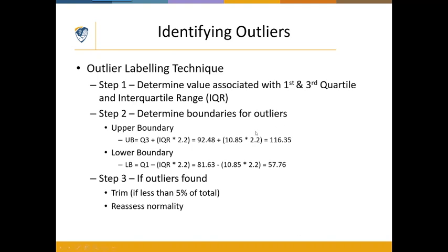There's a three-step process using the outlier labeling technique. Step one is to determine the interquartile range. We take the raw score value associated with the 75th percentile — which is 92.48 — and subtract the raw score value associated with the 25th percentile — which is 81.63. That gives us an interquartile range of 10.85.